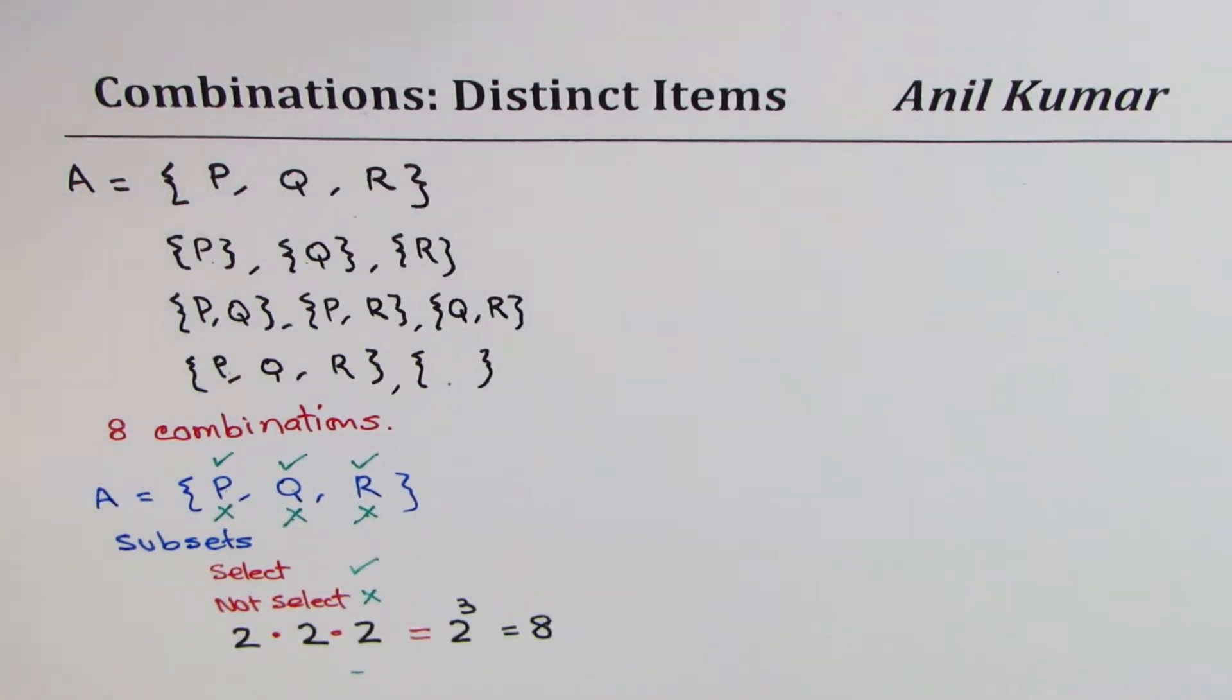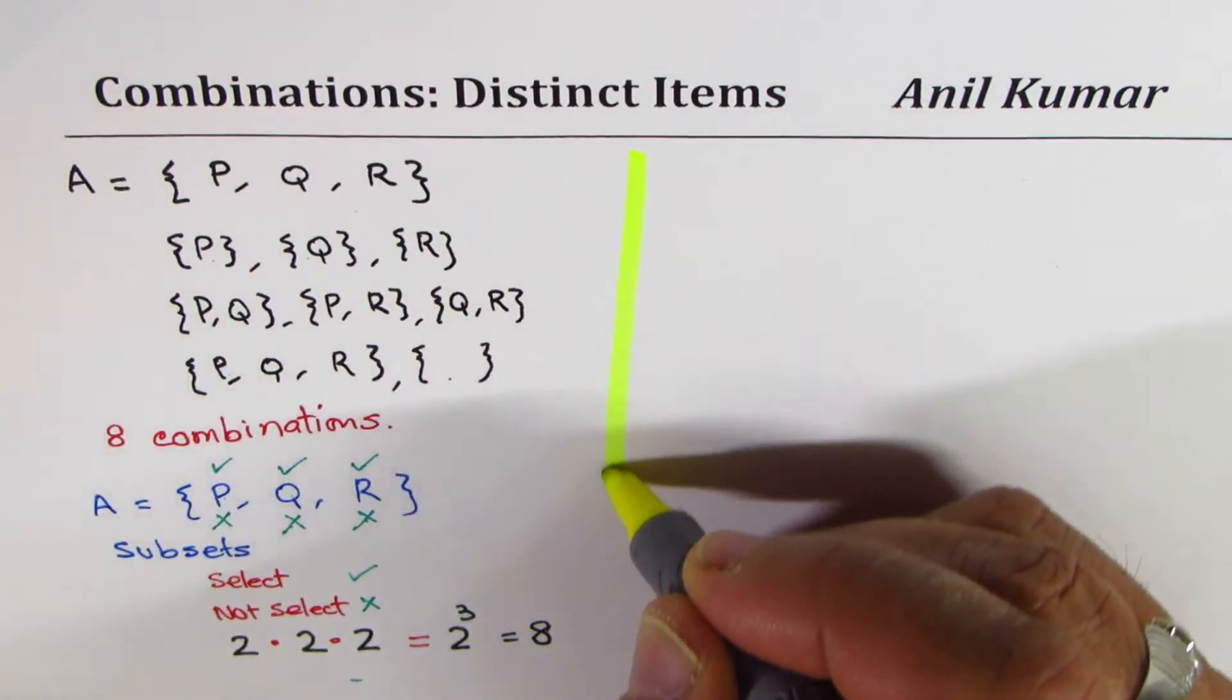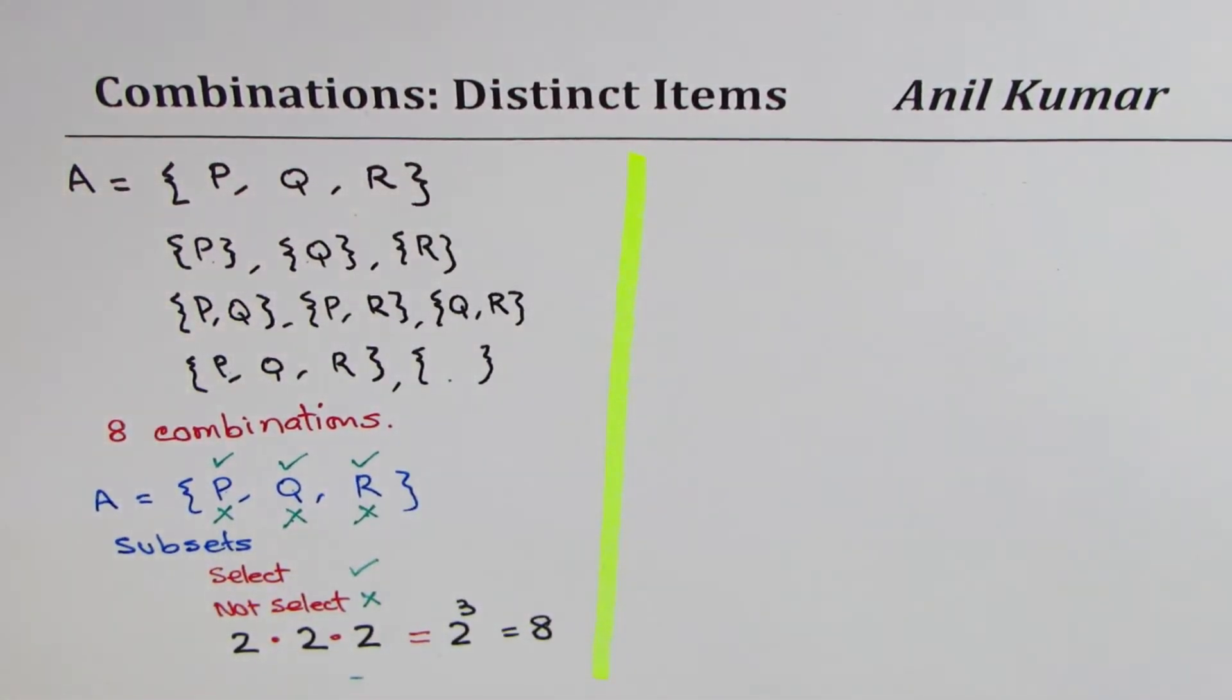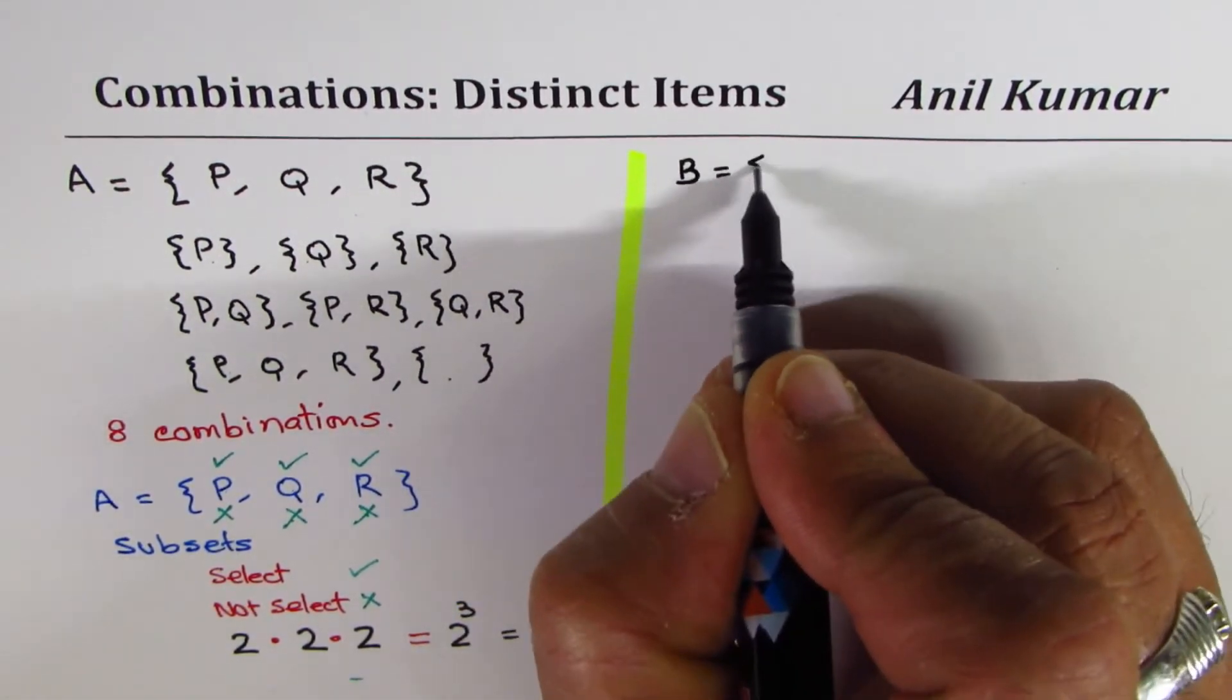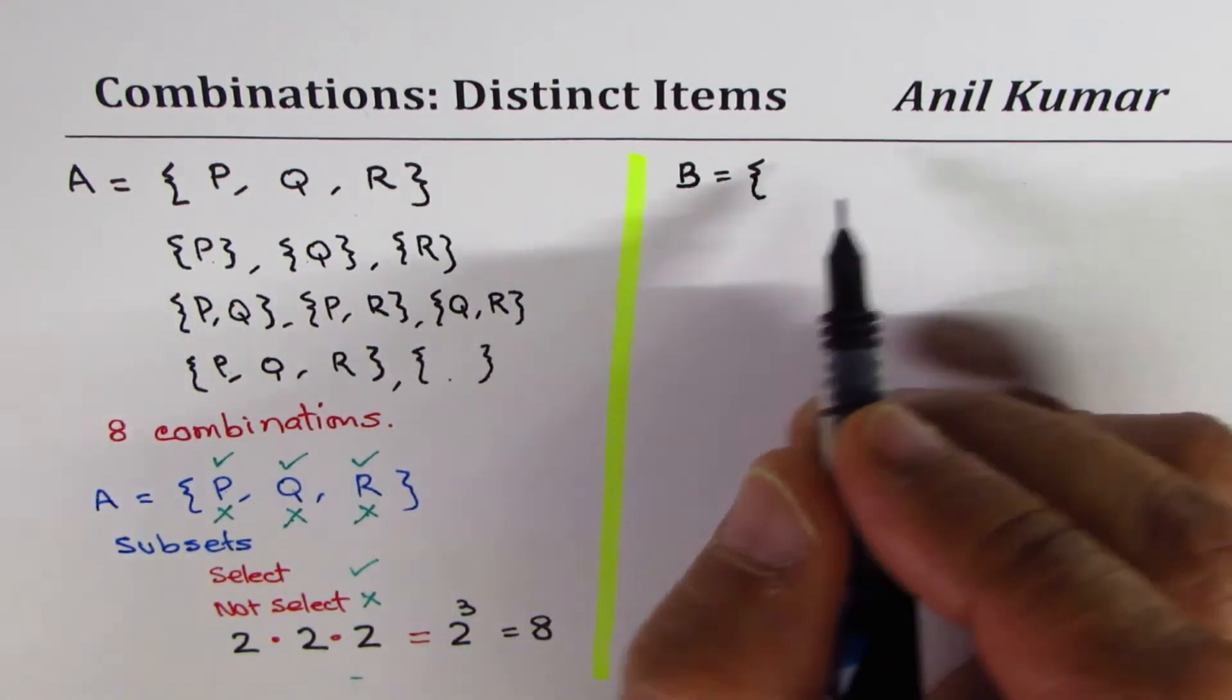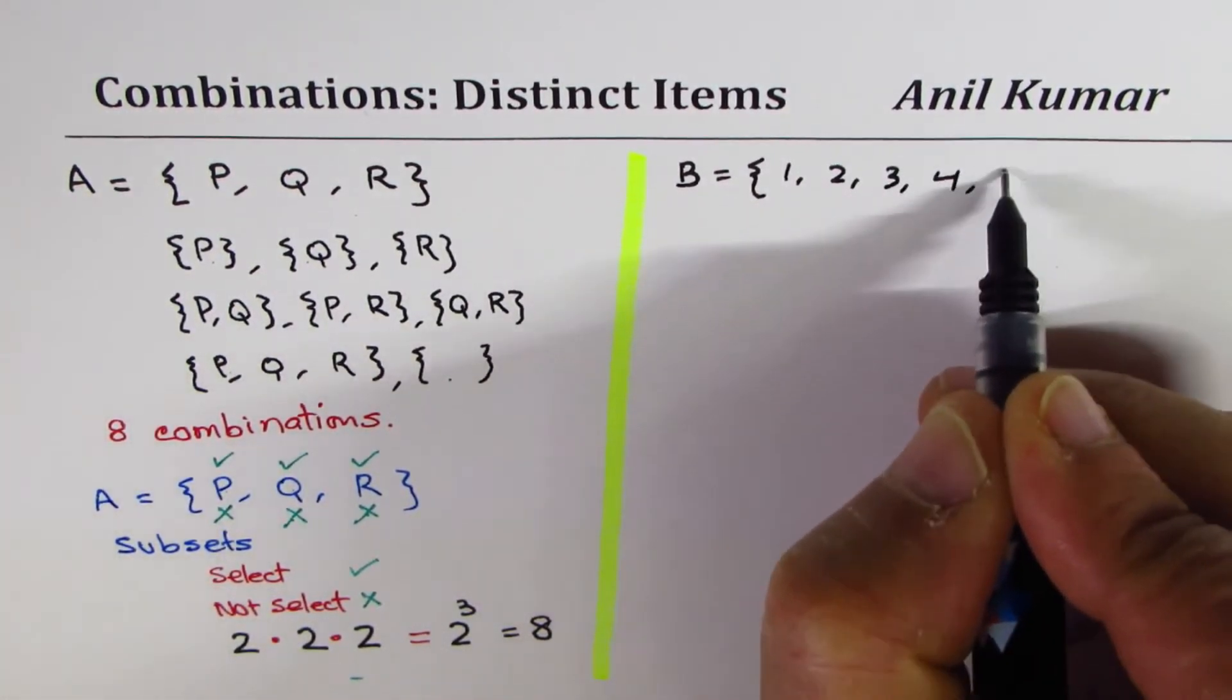So I hope the concept is clear to you. Just to make it very clear, we'll take another example. Now, let me extend this. Now let us say if I have a set B, and in set B, I have five elements. And these numbers are 1, 2, 3, 4, and 5.